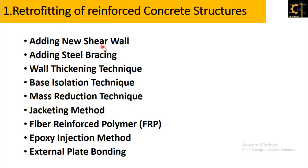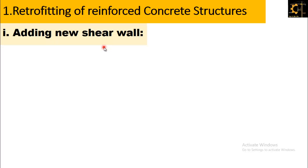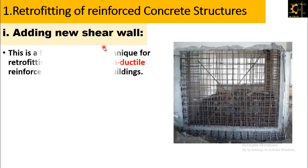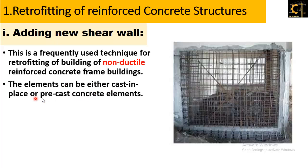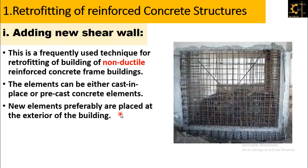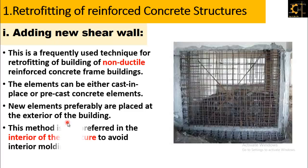The first technique is adding a new shear wall. This is a frequently used technique for retrofitting non-ductile reinforced concrete frame buildings. The elements can be either cast-in-place or precast concrete elements. New elements are preferably placed at the exterior of the building. This method is not preferred for the interior of the structure in order to avoid interior moulding disruptions.